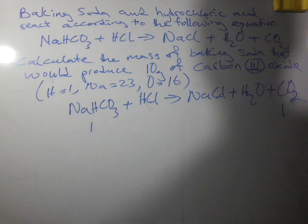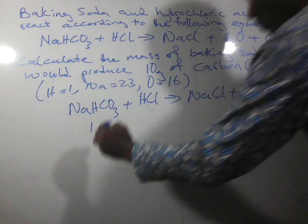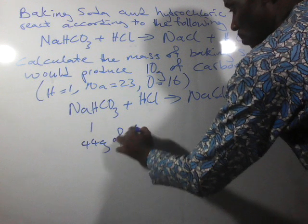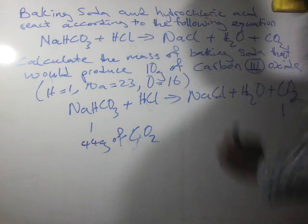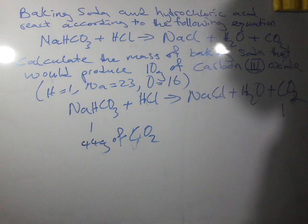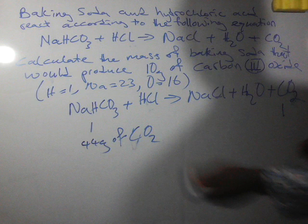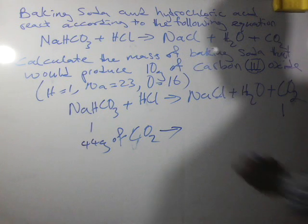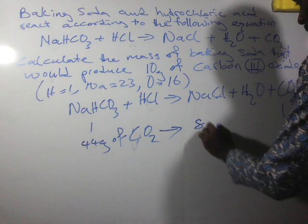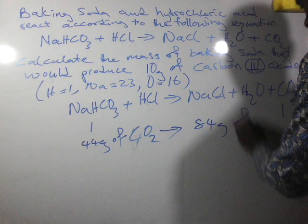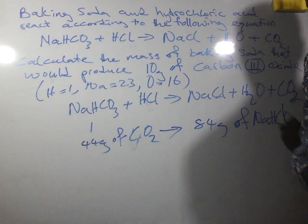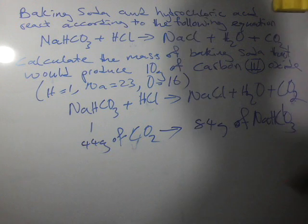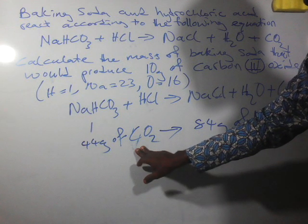So in this case, it simply means that to produce 44 grams of carbon dioxide — that is the molar mass of carbon dioxide — we need 84 grams of sodium hydrogen carbonate. Do you understand? For 44 grams of carbon dioxide we need 84 grams of sodium hydrogen carbonate.